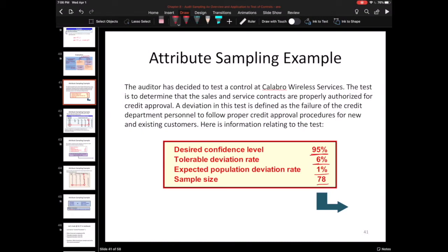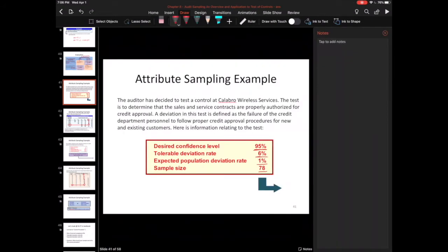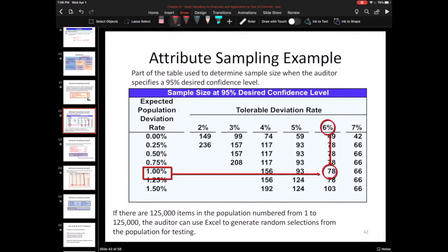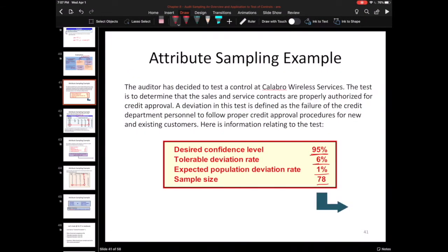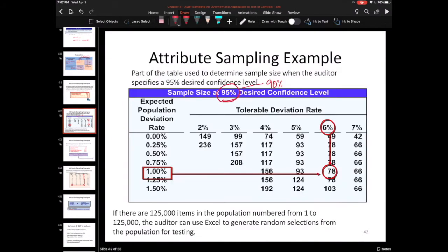The first thing you're typically asked to do in these is figure out the sample size. To figure out the sample size, you actually have these sample size tables, and there are two tables. One is for 95% confidence level, one is for 90% confidence level. Remember 90 versus 95, it's going to be given to you in the question, so just make sure you're always using the right table.